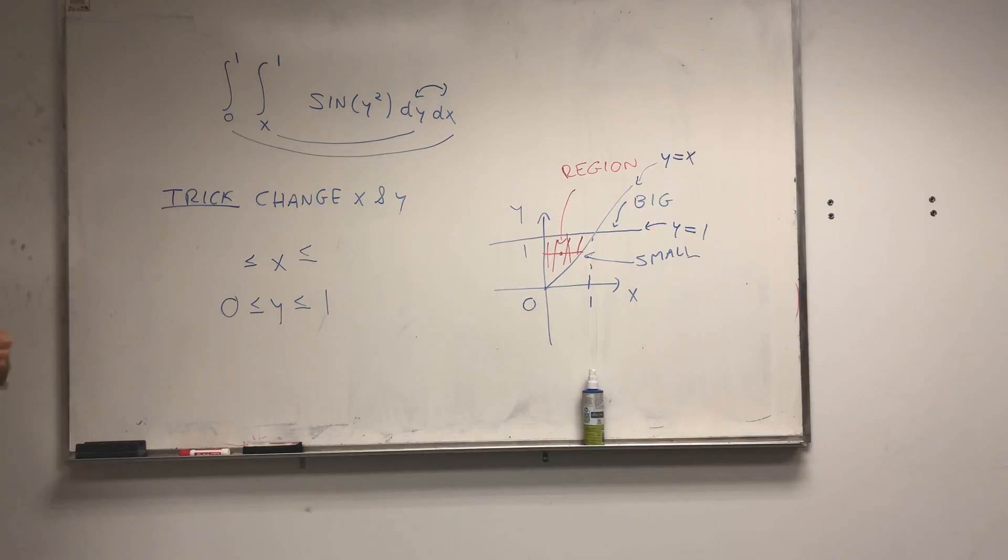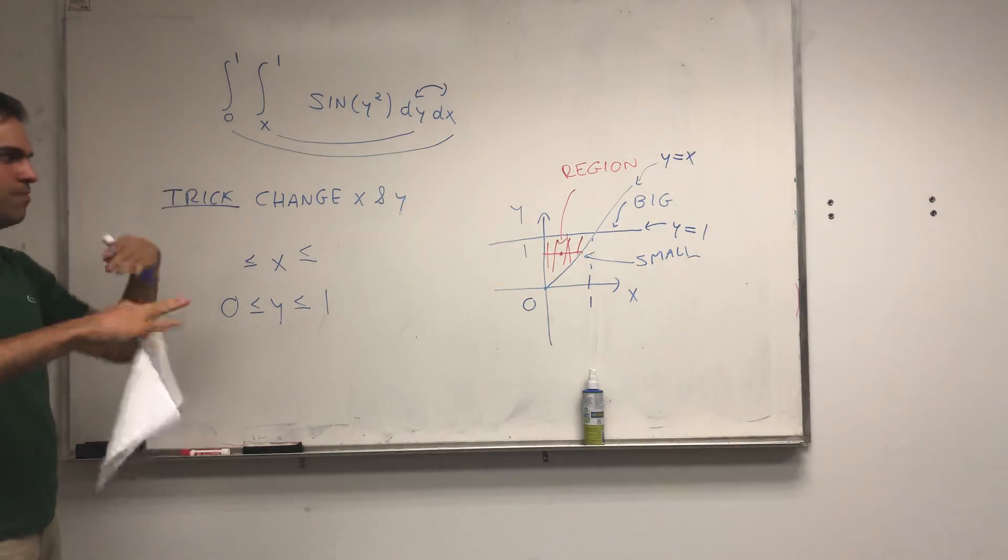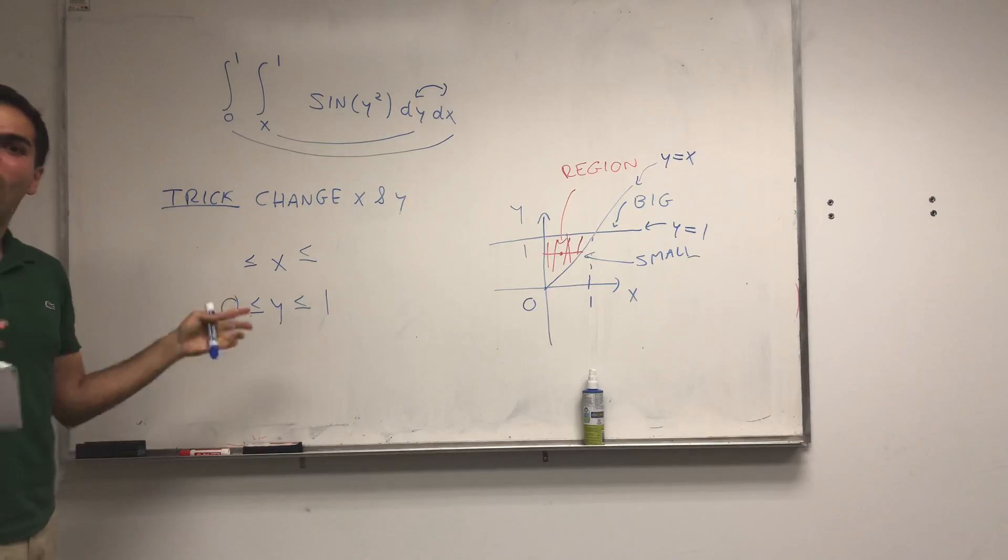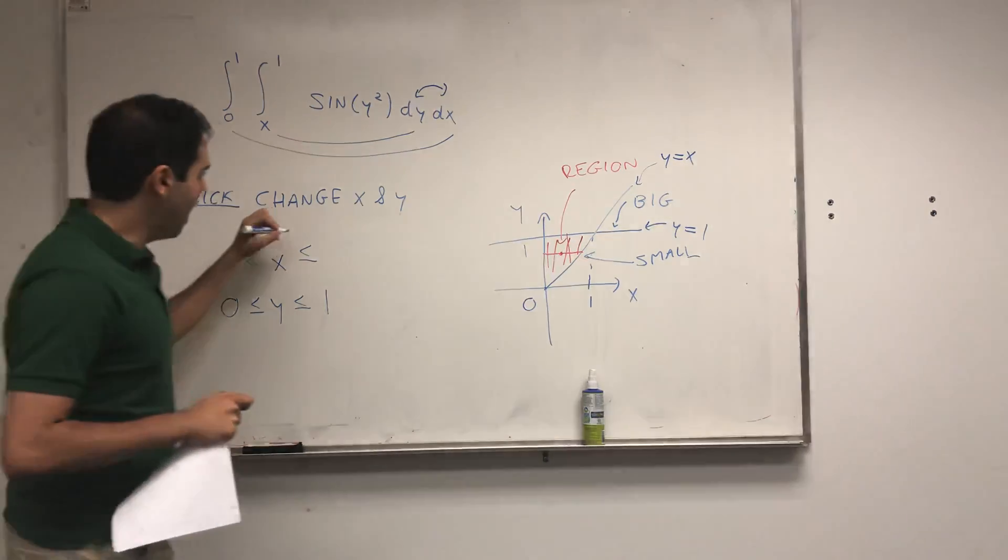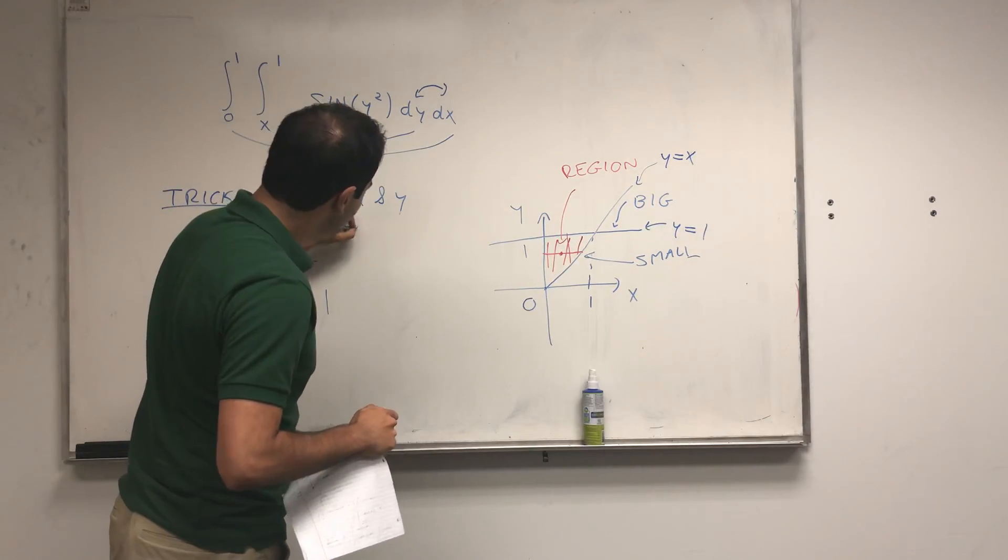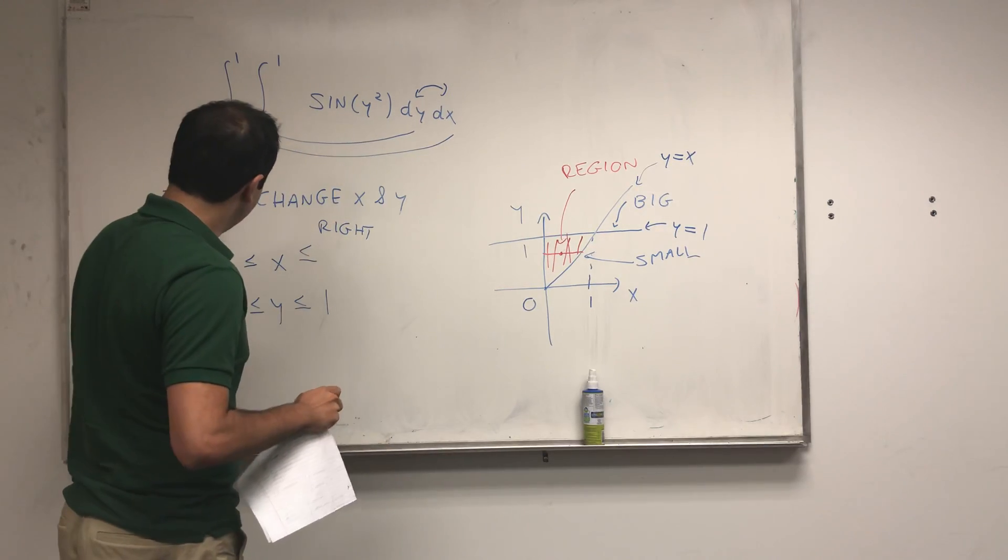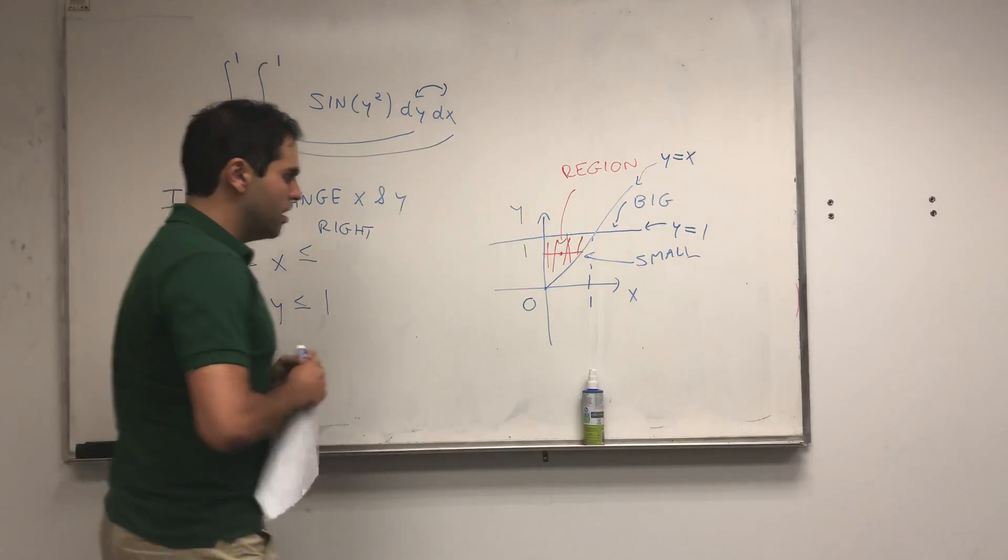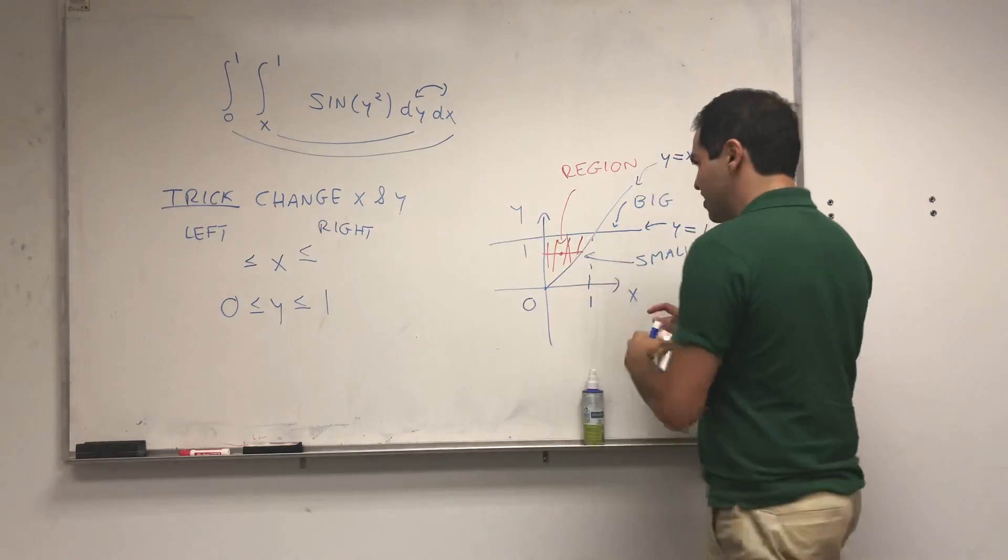And for the x, before we add something, it's between bigger and smaller. For horizontal things, we have that x is between the rightmost function and the leftmost function. And so, now looking at this picture, well, the leftmost function is just a 0 function, so this straight line.